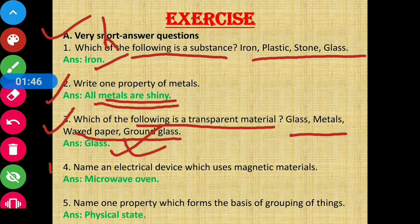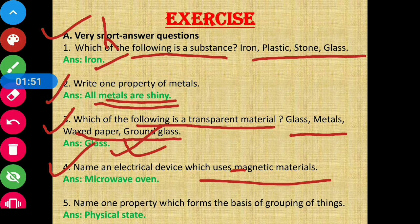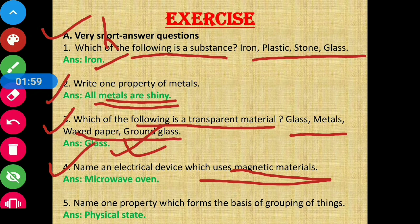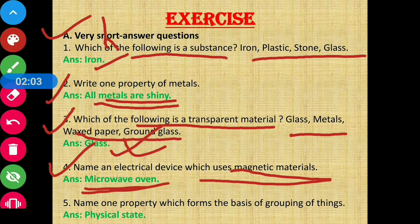Question number 4: Name an electrical device which uses magnetic material. The answer is a microwave oven.